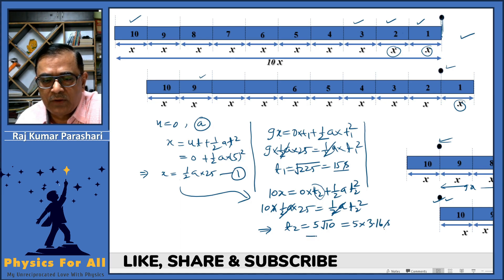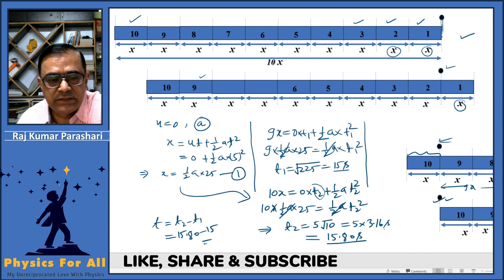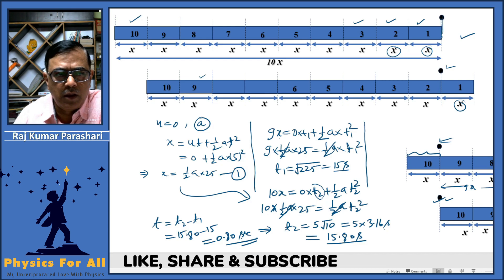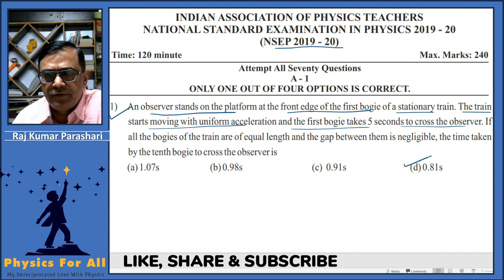Now the time taken by the train to cross over the tenth bogey should be given by t2 minus t1, and this equals 15.80 minus 15, which equals 0.80 seconds. Hence, option D is correct.